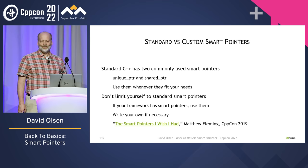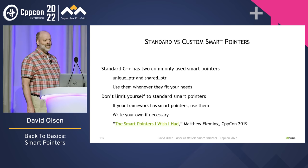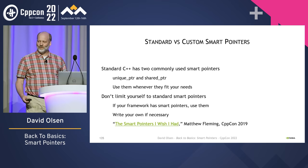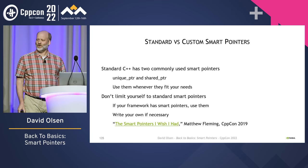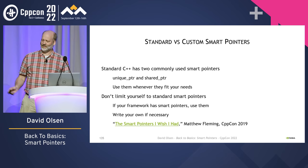To see some examples of non-standard smart pointers, including ones that have nothing to do with ownership, watch Matthew Fleming's 'The Smart Pointers I Wish I Had' from CppCon 2019. If you want a programming exercise in smart pointers to test what you've learned, I recommend writing your own smart pointer that prevents the pointer from being null — a non-null smart pointer. Think about what API that type should have, what you should be able to do with it, and where you should put the null check. I think that'll be a good test of understanding how smart pointers are supposed to work.